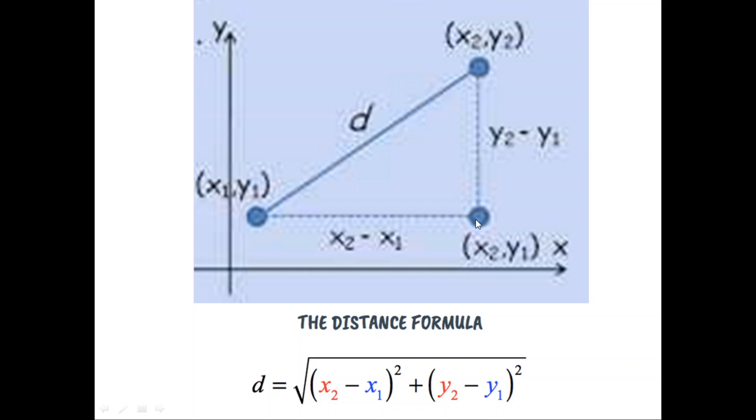So what would be the length of this side? Well, here if this point has coordinates x2, y1, then the length of this horizontal line would be x2 minus x1. And the length of this vertical line would be y2 minus y1. So the horizontal distance is x2 minus x1. The vertical distance is y2 minus y1.